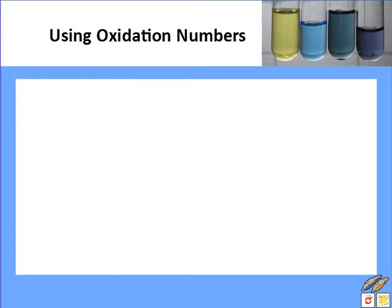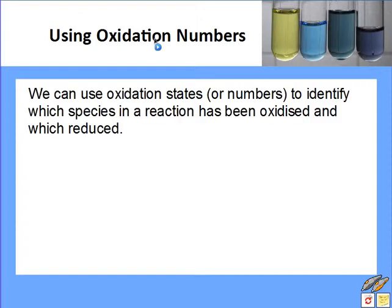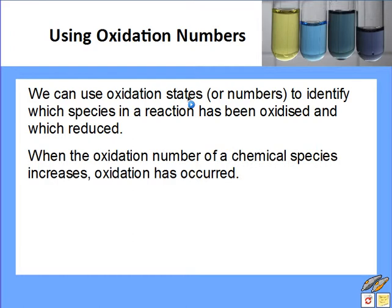Let's talk about using oxidation numbers today, or oxidation states. Now that we know how to assign oxidation states, we can use them to identify which species in a reaction has been oxidized and which has been reduced.